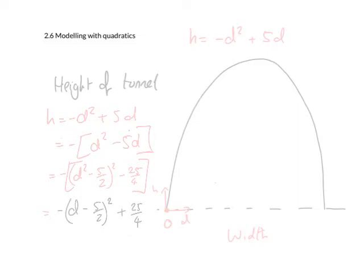The reason we've done this is if we make this bracket equal to 0, we get the height of the tunnel. We get the maximum value of h. That's what 25 over 4 is. It happens at 2.5, so d equals 2.5, h is going to be 6.25. So we get the height of the tunnel at 6.25 metres.